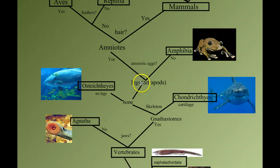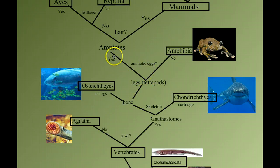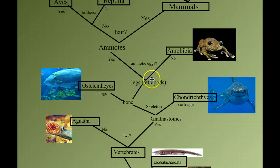Within the tetrapods — those vertebrates with limbs — we have to ask the question: do we have an amniotic egg? Yes or no? When we go down the no branch, we get to the class Amphibia.